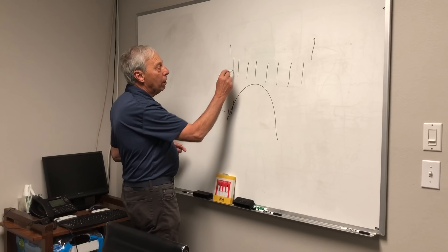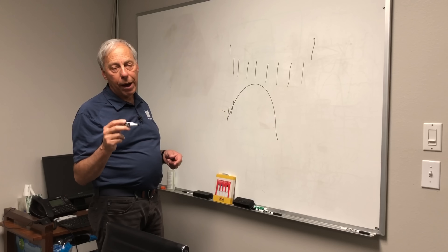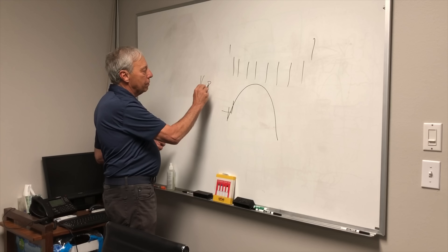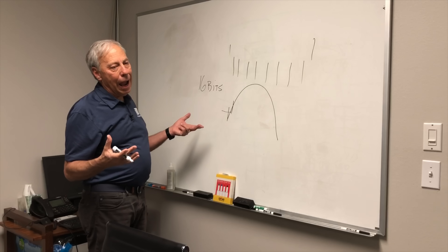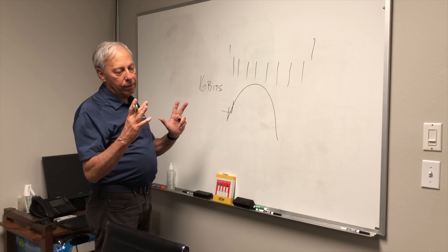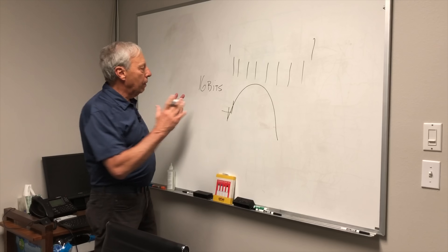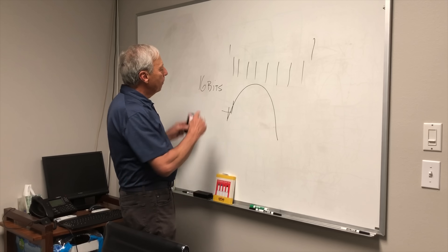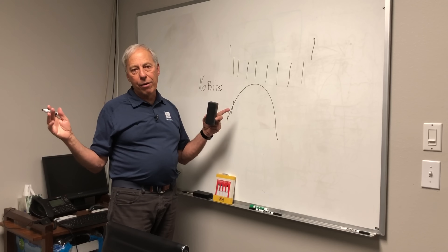For every second we take 44,000 snapshots of the voltage and record it as a number. The size of that number is determined by the bit depth. So 16 bits is how many numbers are within a word. The more bits you have, the higher the number you can count to.